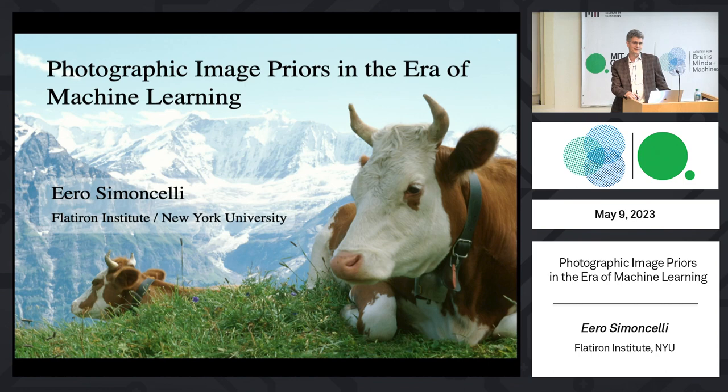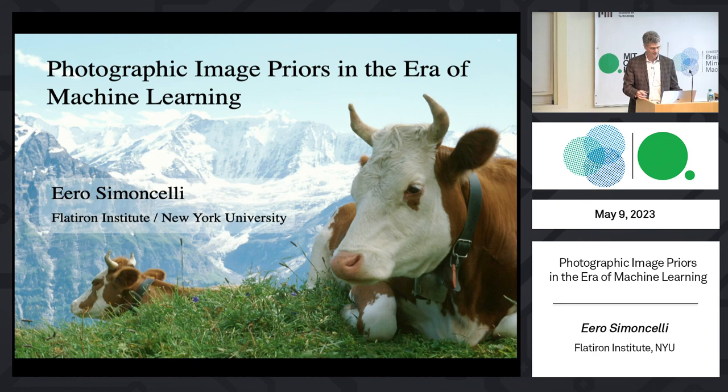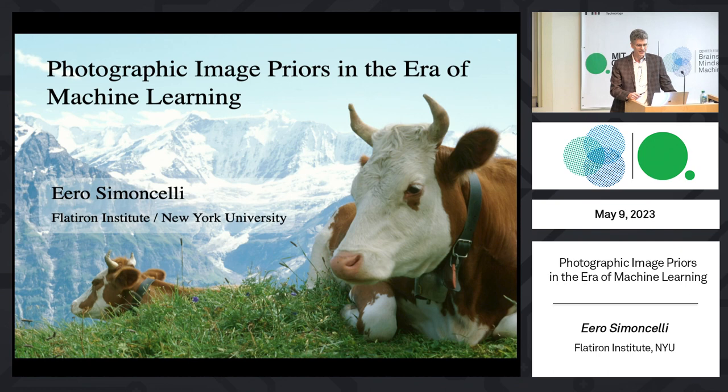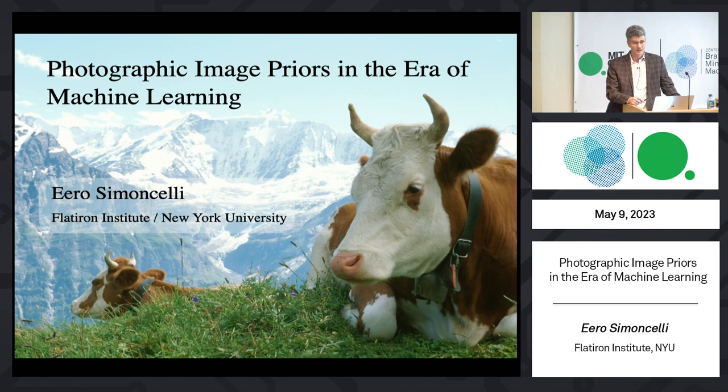The Flatiron Institute is an internal research endeavor by the Simons Foundation aimed at using computational methods, tools, ideas, and theories to advance science in different directions. It actually consists of five different centers, and I'm the director of the Center for Computational Neuroscience. So I'm going to tell you about stuff that's developed in my group over the last four years when we succumbed to the deep net craze. We were resisting, but resistance is futile — we basically had to give up about four years ago.